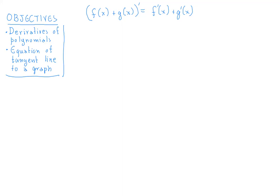The derivative at x is the slope of the tangent to the graph at the point determined by x. Also, when you multiply a function by a constant and take its derivative, that is simply the constant times the derivative of the function. This will allow us to only worry about the derivatives of functions like x^n, because every polynomial can be written as the sum of multiples of such functions. For example, p(x) = 5x³ - 3x² + 2.